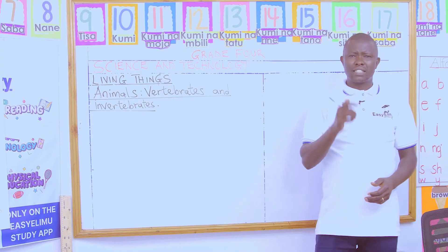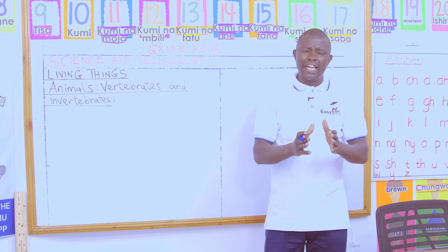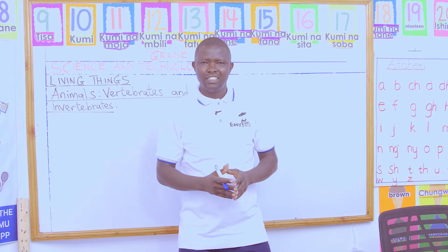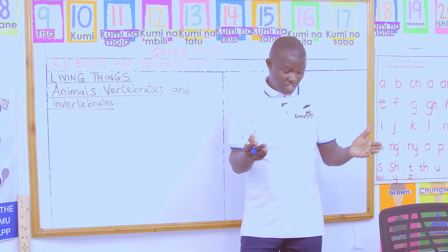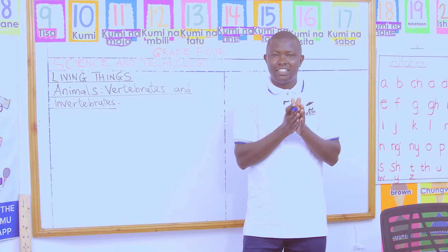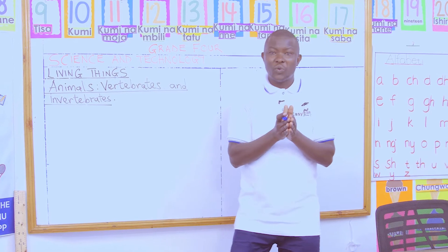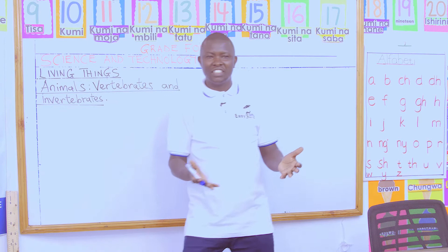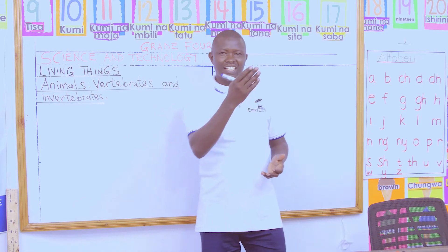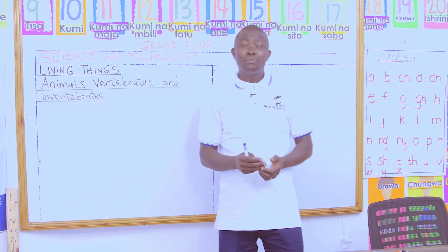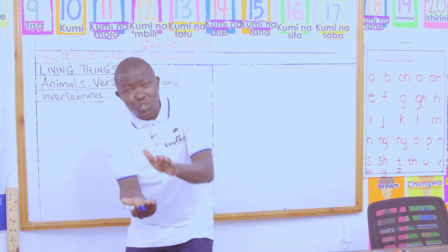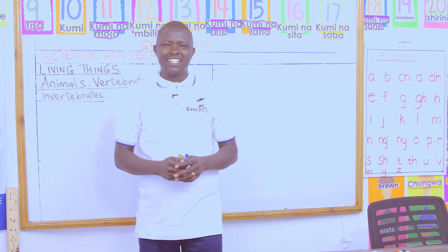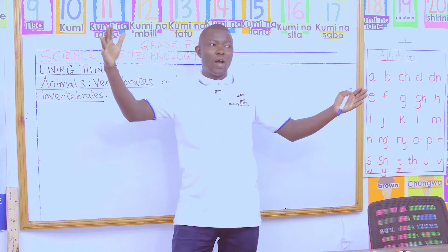And now I will ask: do all these animals look alike? What can you tell me before I give you my answer? What can you say in your pairs? Victor has said that some animals are big like the elephant, but others are too small like a locust. Correct, that is a good answer.